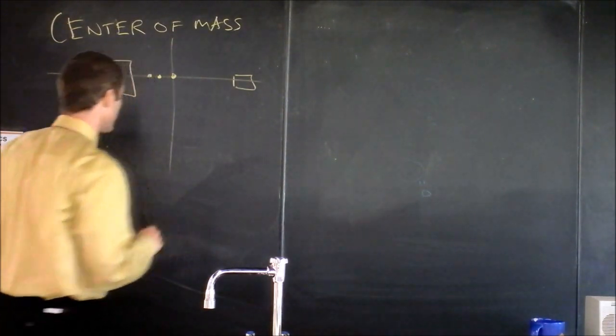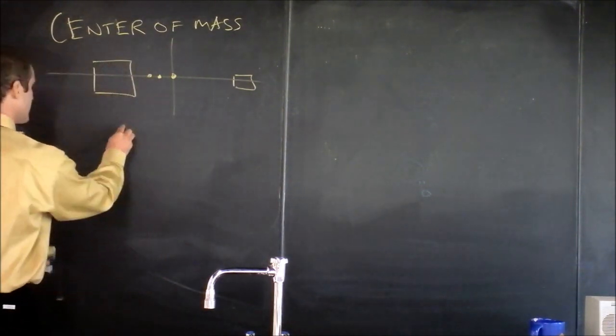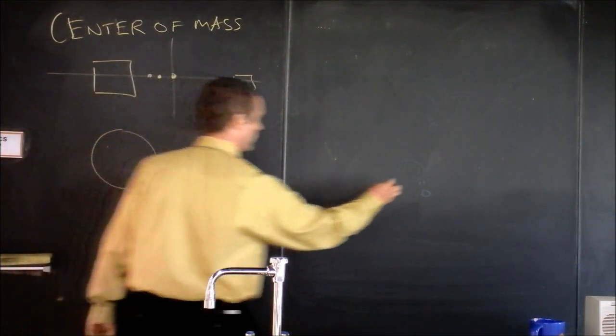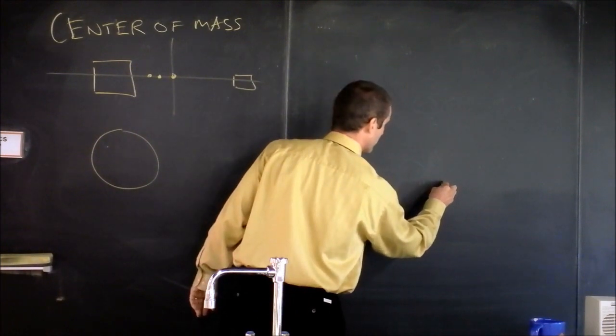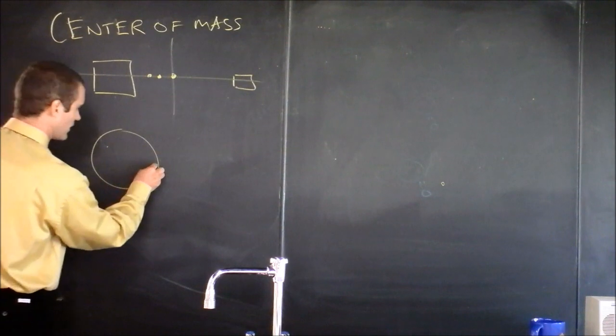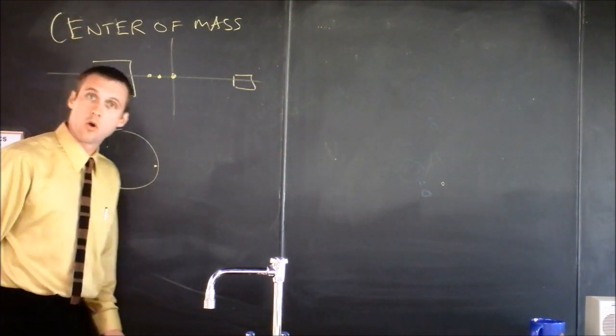There's another cool system where the center of mass is something interesting. Here's the Earth and here's the Moon. It's probably like way over here. There's the Moon right there. The center of mass between the Earth and the Moon is actually just within the Earth.